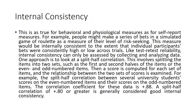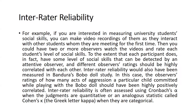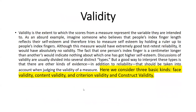Now we come to the types of validity. Validity is the extent to which scores from a measure represent the variable they are intended to measure. As an example, imagine someone who believes that people's index finger length reflects their self-esteem and tries to measure self-esteem by holding a ruler up to people's index finger. Although this measure would have extremely good test-retest reliability, it would have absolutely no validity.